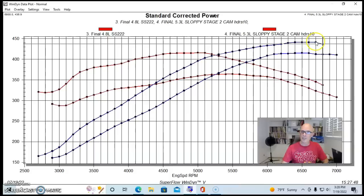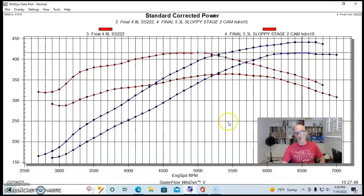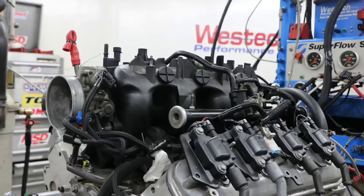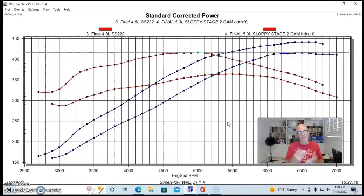We ran the Sloppy Stage 2 on the 4.8 all the way out to 7000, and we ran it to 6700 or 6800 on the 5.3. They're still making pretty decent power but they're getting near the end of it. Part of that is because we have the stock heads on both and the stock long runner or factory truck intake manifold. We didn't have Trailblazer SS or FAST, which would have improved these things even further.